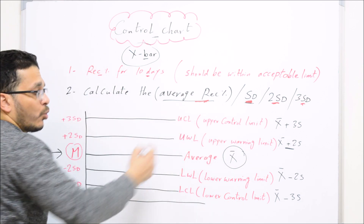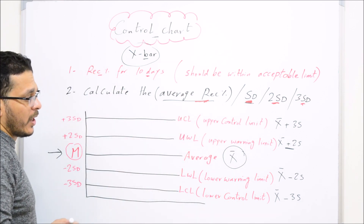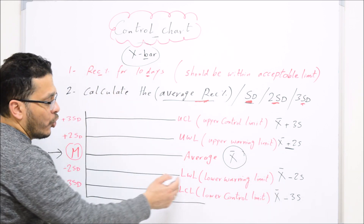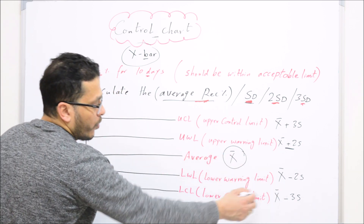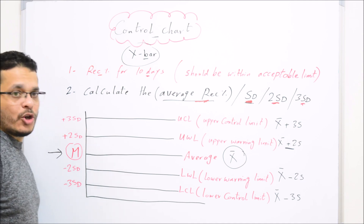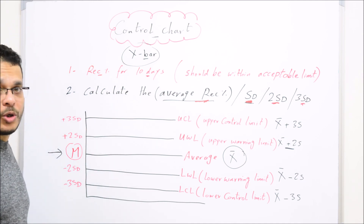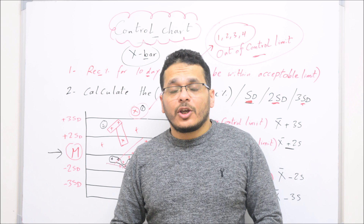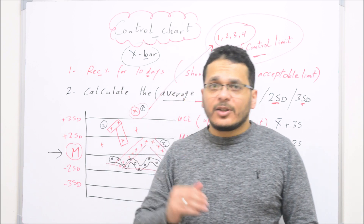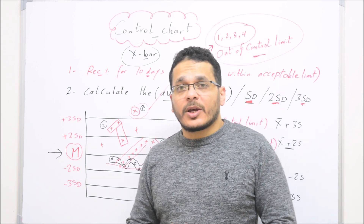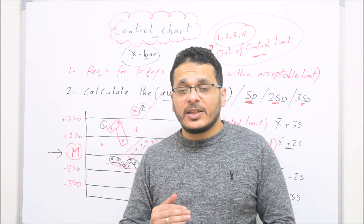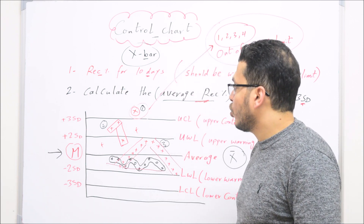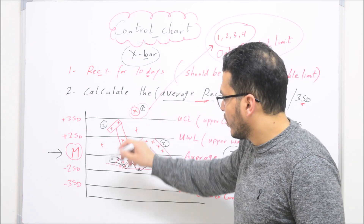X-bar plus 3 standard deviations gives you the upper control limit or upper action limit. X-bar minus 2 standard deviations gives the lower warning limit, and X-bar minus 3 standard deviations gives the lower control limit or lower action limit. After drawing the control chart, you continue calculating the recovery for every spike sample each day, and each recovery value is added to the control chart as a new point.